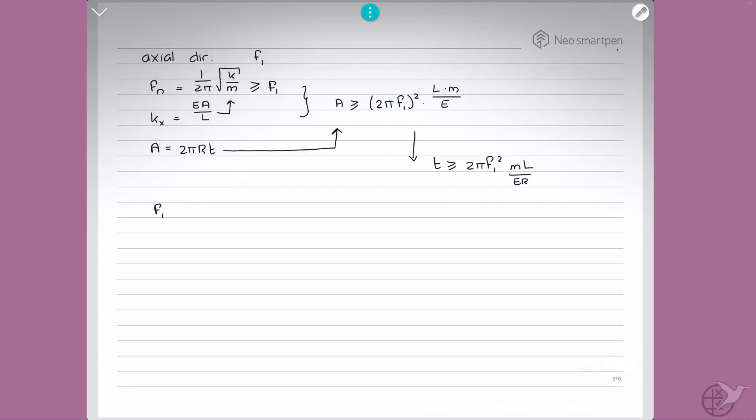If we then substitute all the numbers, so f1 is equal to 31 hertz, m is equal to 2500 kilograms, L is equal to 5 meters, and r is equal to 0.5 meters, and the modulus of elasticity for aluminum is equal to 72 GPa. If we substitute all of these numbers into this formula, we find that the minimum required wall thickness in axial direction has to be larger than 0.0021 meters or 2.1 millimeters. So this is for axial direction.